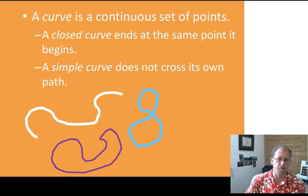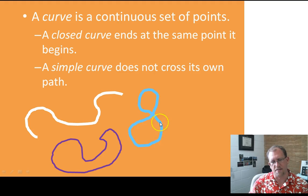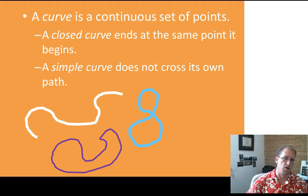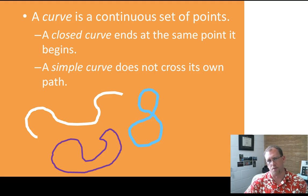A simple curve does not cross its own path. So these two curves here are simple. This is not closed, but it is simple. It does not cross itself. This one does not cross itself. This one does. And so this one is not simple. The other two are. So I have two closed curves and one that is not closed, and I have two simple curves and one that is not simple. So take a look at those. Make sure that you understand them before you let the video go on.